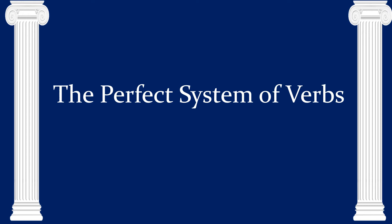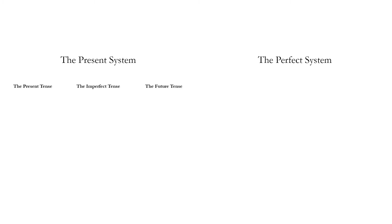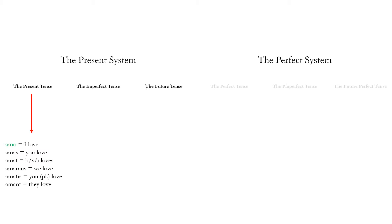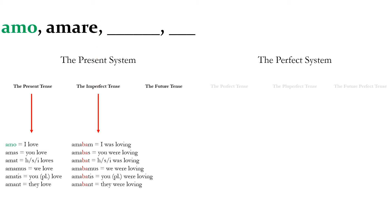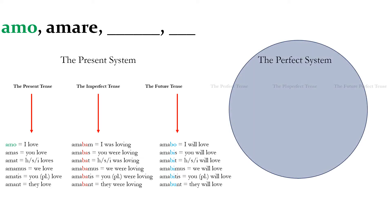We're going to be talking about the perfect system of verbs — this is the second one. There are two systems of verbs; each system has three tenses. We have the present system and the perfect system. The present system is what we started with: we had the present tense where we got 'amo' — I love, or I am loving, I do love — and we got the imperfect, which talks about what we used to do or what we were doing, 'amabam,' and we have the future, which talks about what we shall do.